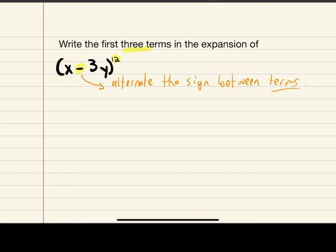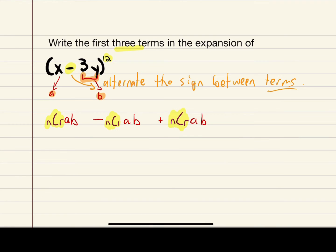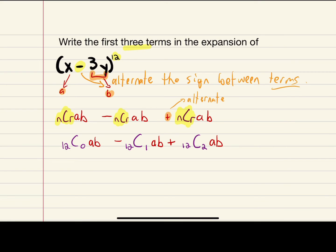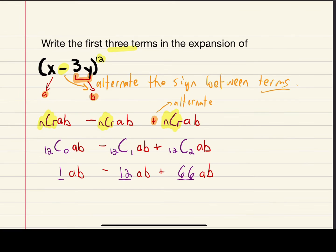We set up the three terms with alternating signs: nCr · ab − nCr · ab + nCr · ab. If there were a fourth term, it would be minus again. Using combinations, this becomes: 12 choose 0 · ab − 12 choose 1 · ab + 12 choose 2 · ab. Plugging those into the calculator gives coefficients of 1, 12, and 66.